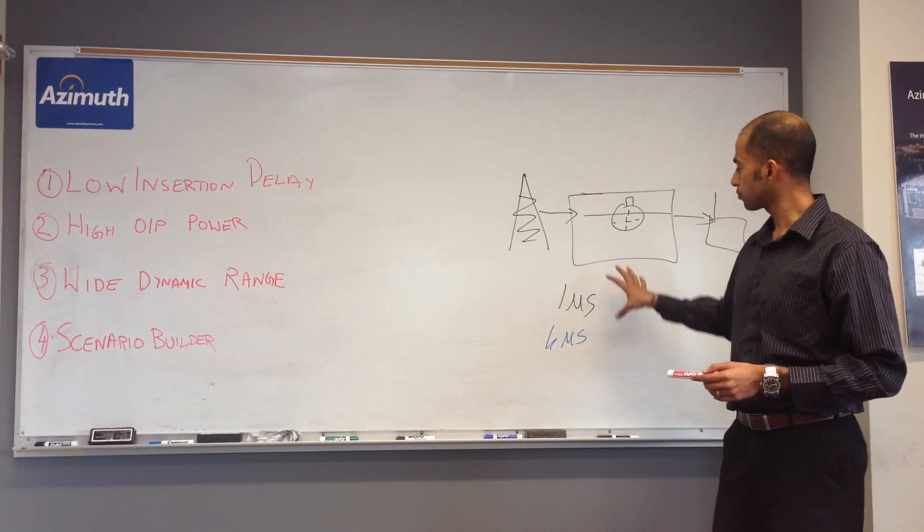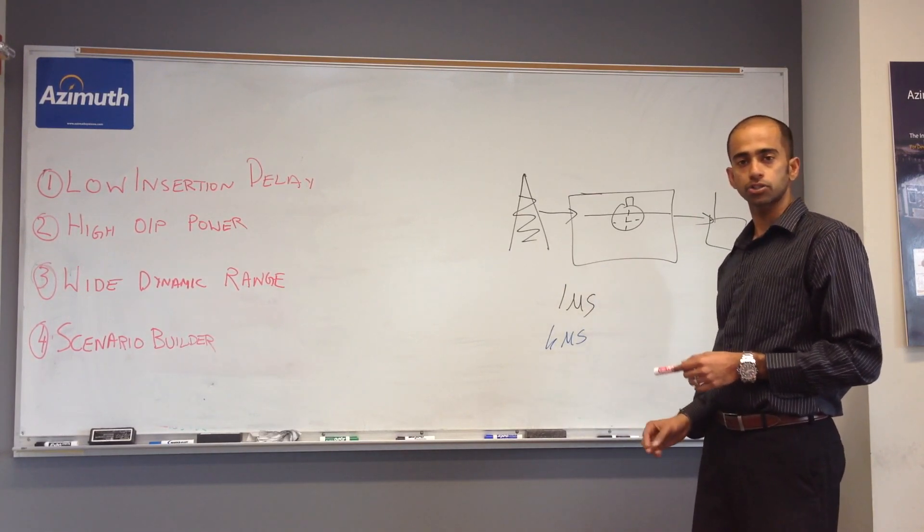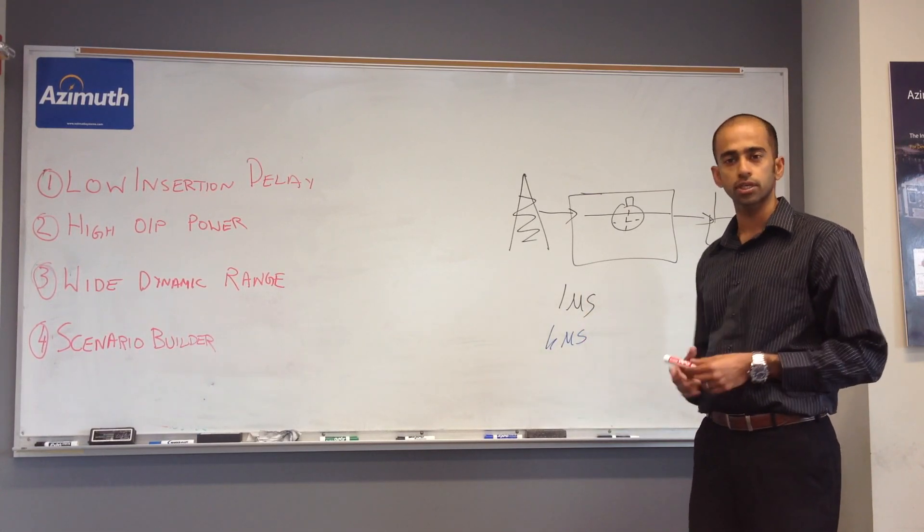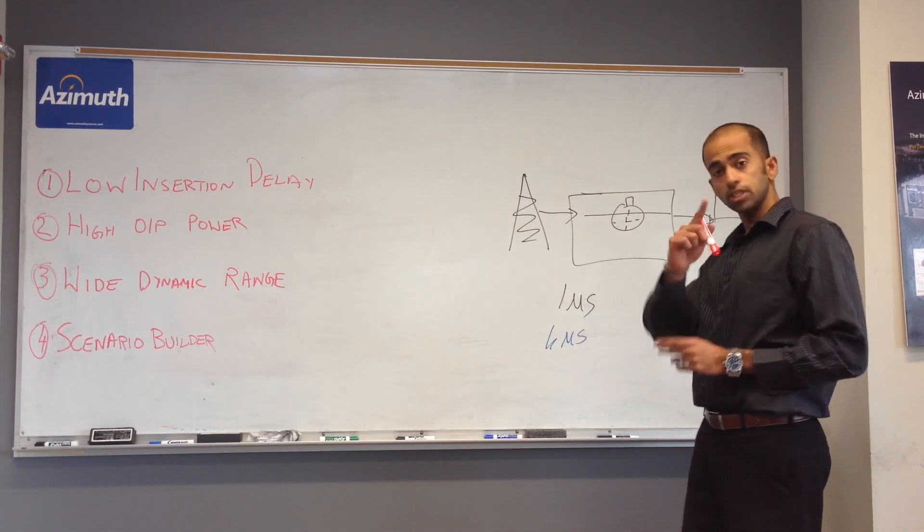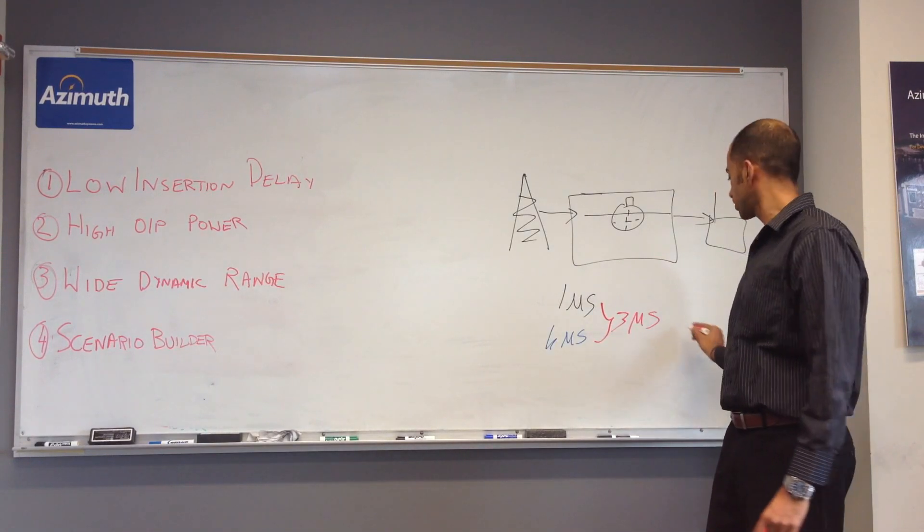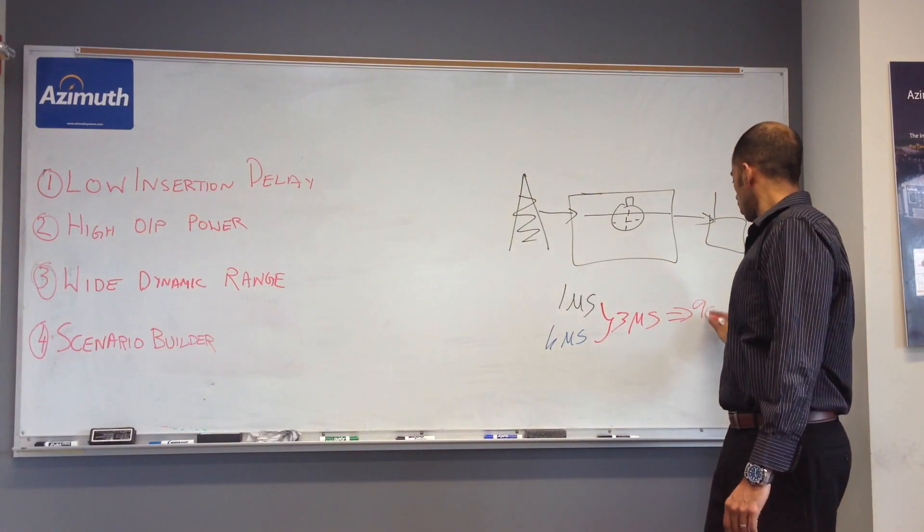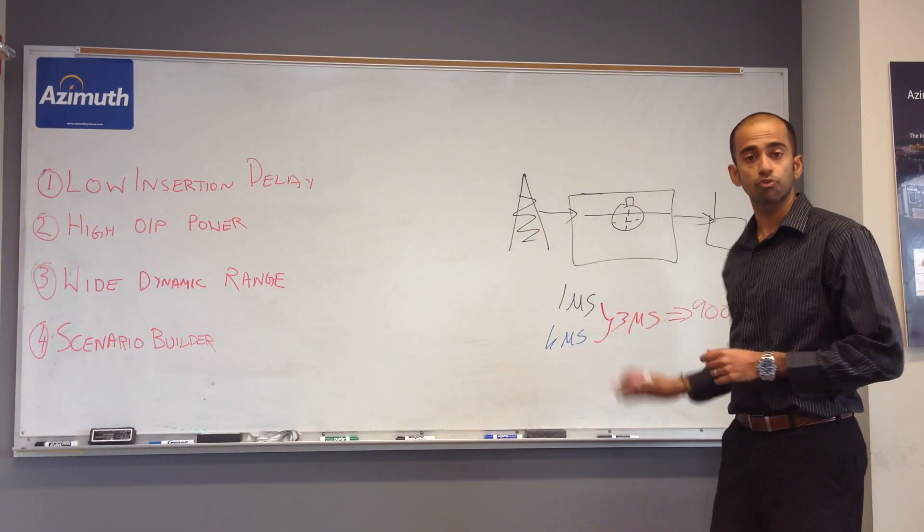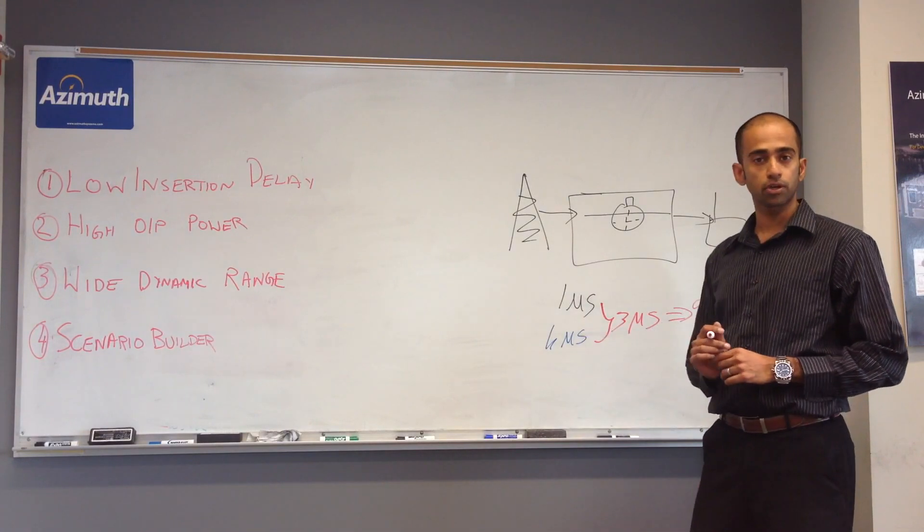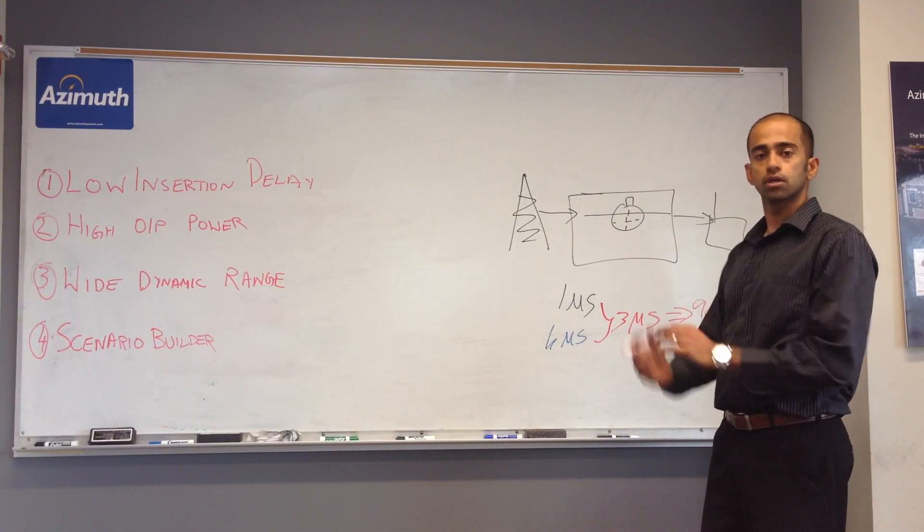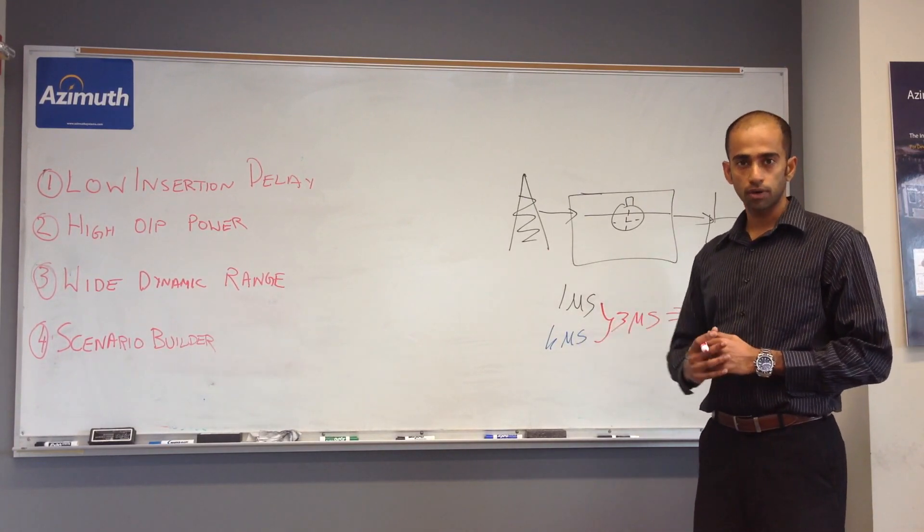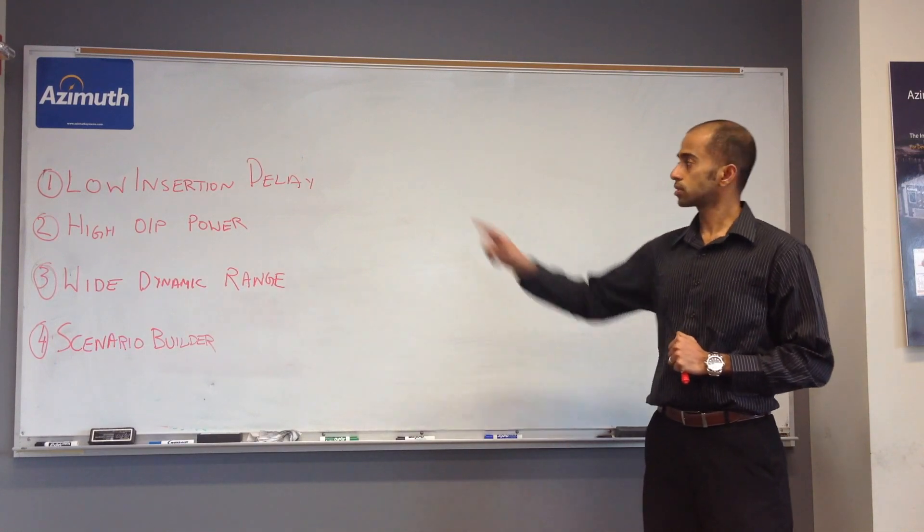Let's look at an example. I have two pieces of equipment. One with one microsecond insertion delay and another with four microseconds insertion delay. You might say, okay, it's just three microseconds. Why is that relevant? The reason that's important is because this difference of three microseconds essentially translates to a physical separation, a physical distance of 900 meters. Think about it. Just by using a piece of equipment with a four microsecond delay, you've essentially moved the device out by 900 meters, which makes a huge difference for small cell emulation.